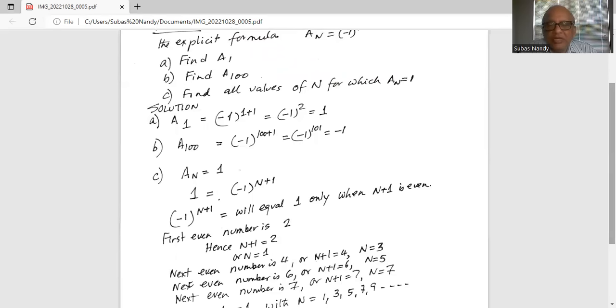Next even number is 6, or n+1 equals 6. So n is equal to 6 minus 1, which is 5. Next even number is 8. So n+1 is equal to 8. Subtract 1 from both sides, n equals 7. Even number after 6 is 8, definitely not 7. There is a typo there. So n+1 should be equal to 8, and subtracting 1 from both sides, n equals 7.